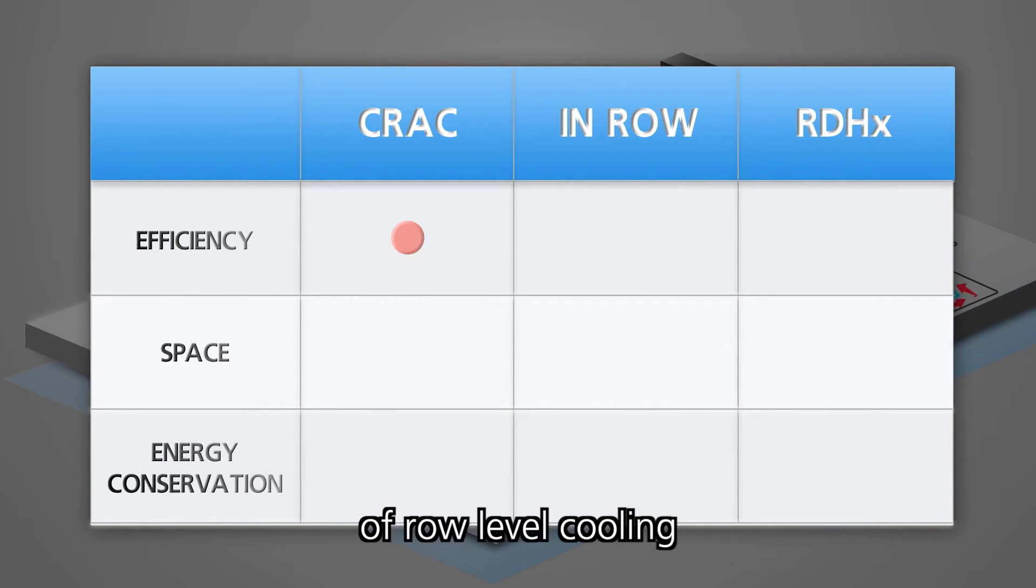The new RD-HX addresses each drawback of row-level cooling and provides the best energy performance in the most effective cooling system the industry has to offer. Results of the SV-LG chill-off report indicated significant performance variations among CRAH in-row and RD-HX in-rack cooling methods.